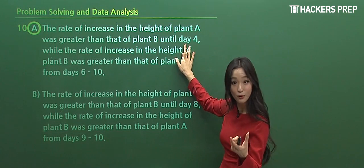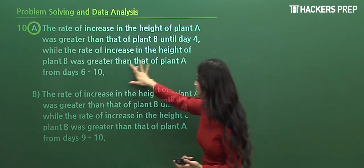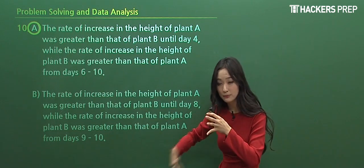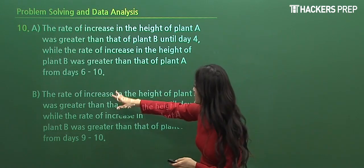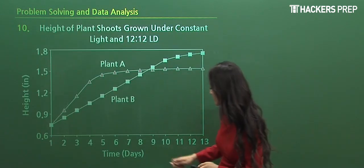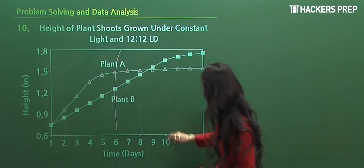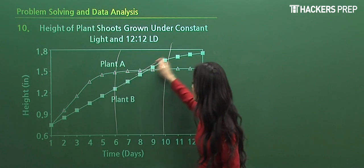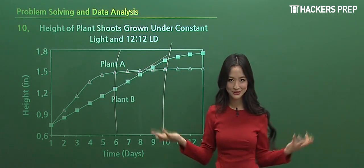And after that, B grows faster than A from the remaining days. And they do talk about six to ten. Let's go back to the chart real quick and look at six to ten. Yeah, we can see that A slows down, yet B has a greater slope, so it's growing.